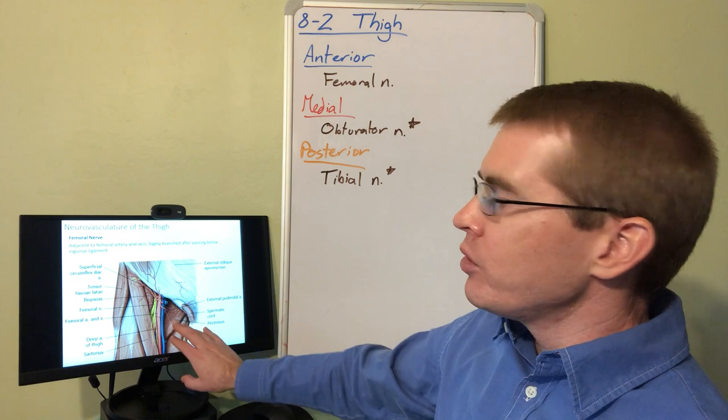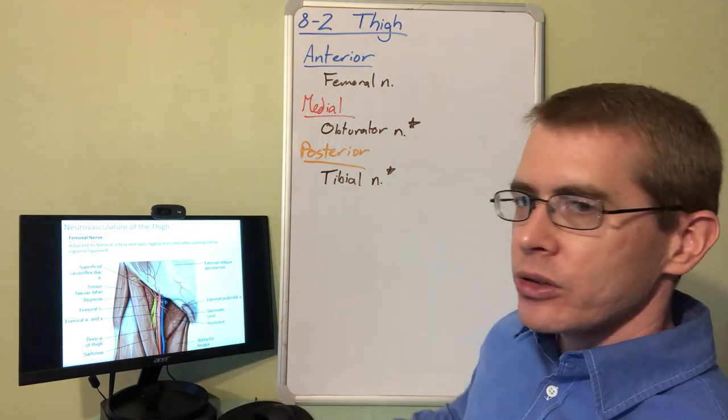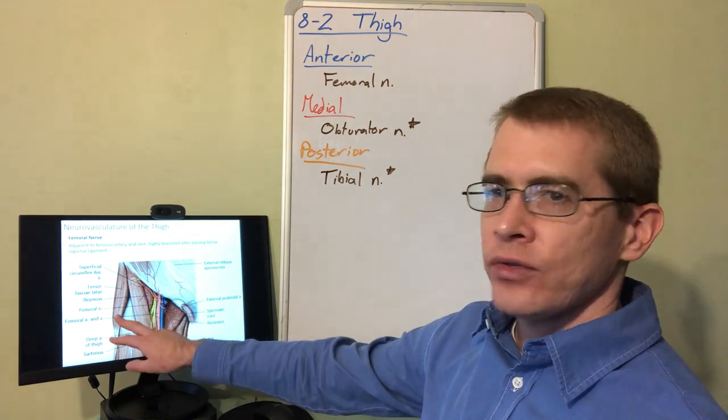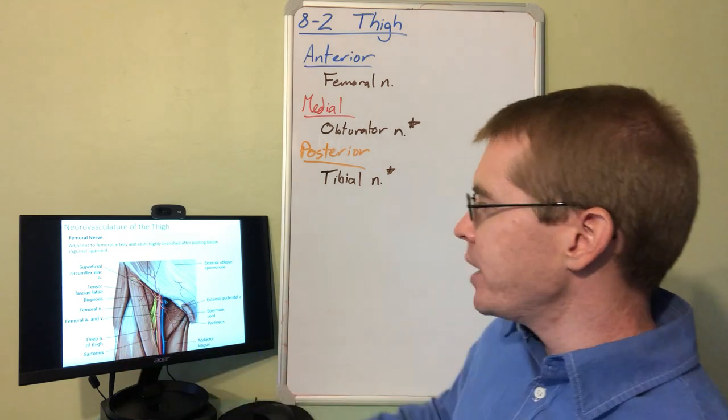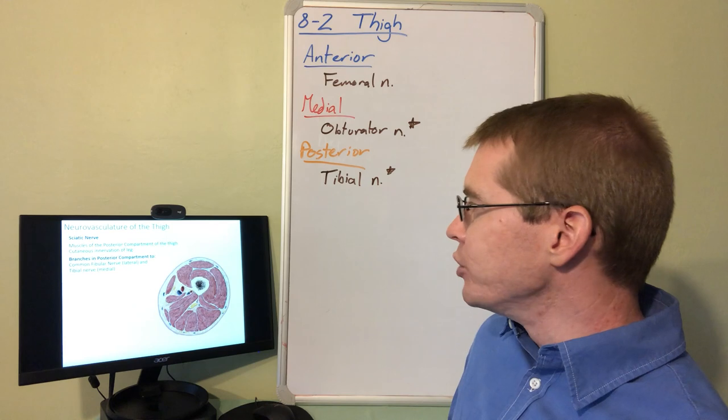So the femoral triangle, this is what that neurovasculature looks like when we get into a dissection. This is a pretty accurate drawing. You can also see tensor fascia lata here, very well toned in this drawing, attached to the IT band.